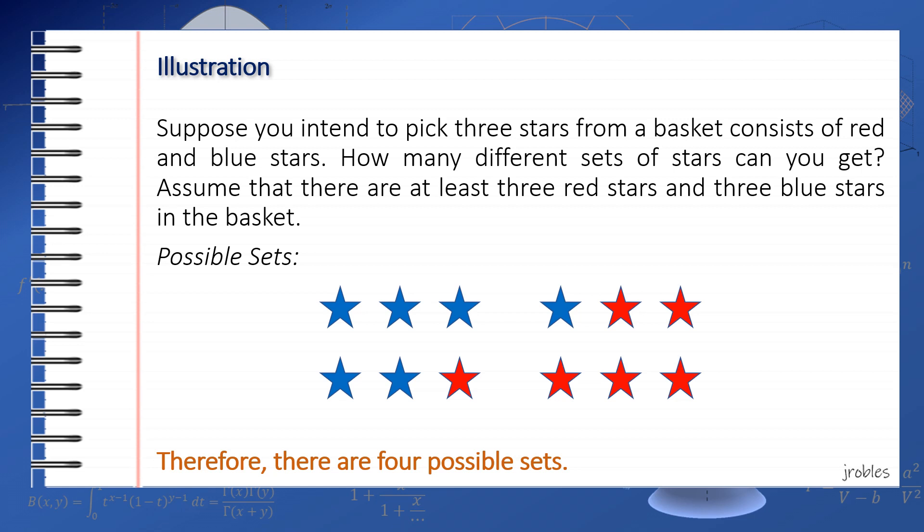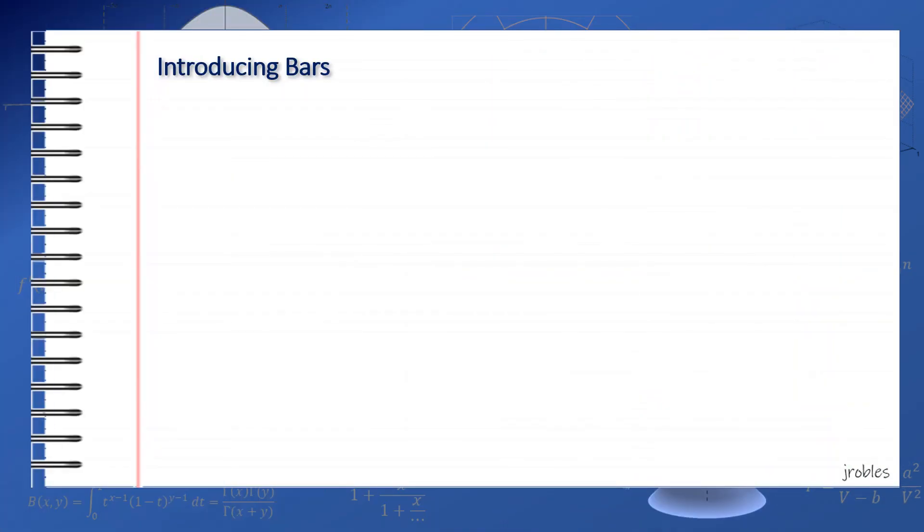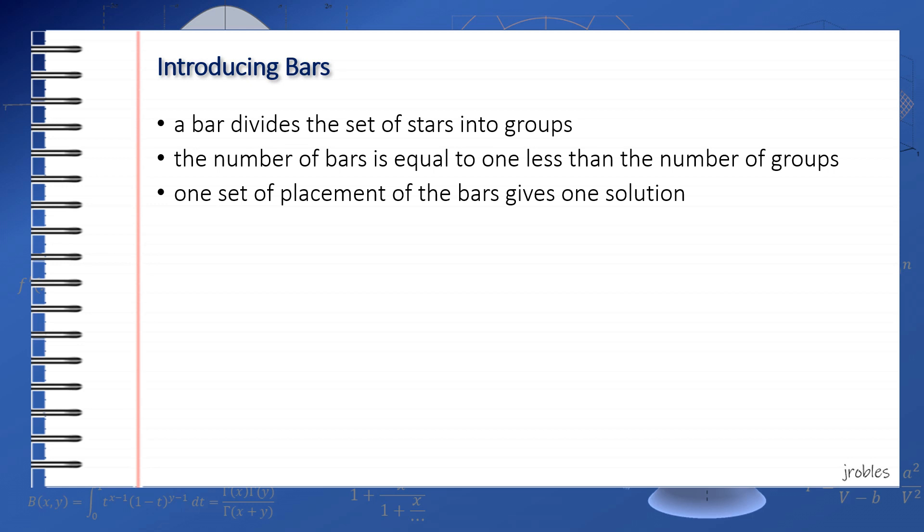At this point, I'd like to introduce the notion of bars. Given the set of stars earlier, a bar is an object that will divide the stars into groups. Note that if we wish to divide a set into R groups, then we need R-1 bars. For example, if we place a bar in between the second and third star, we have divided the stars into 2 groups, which consist of 2 stars and the other with 1 star.